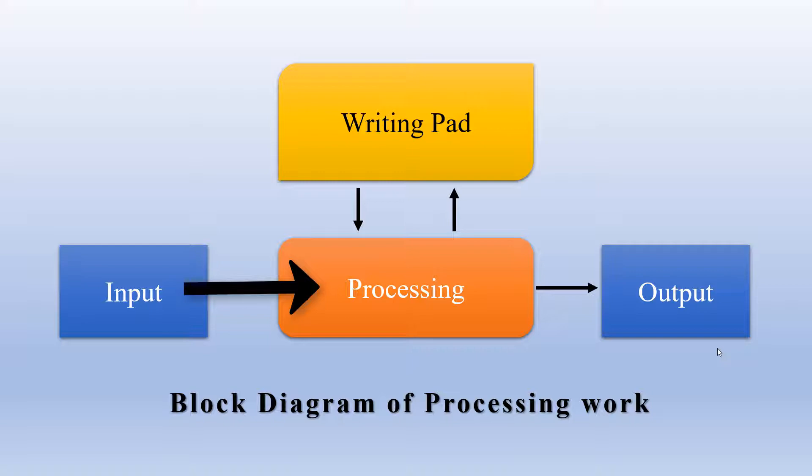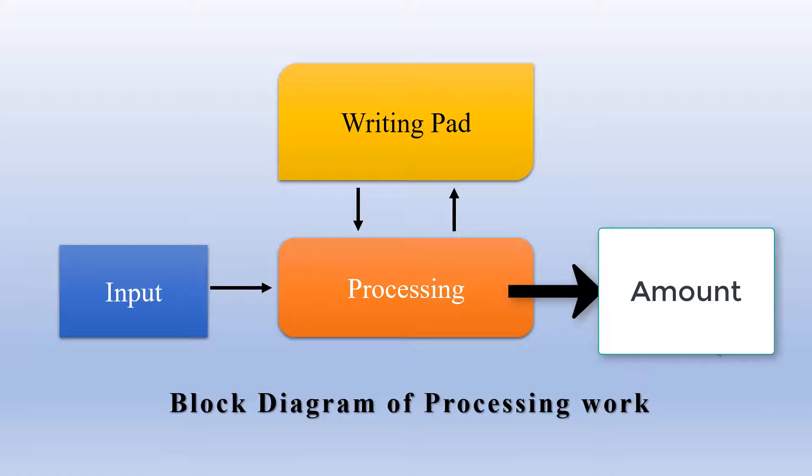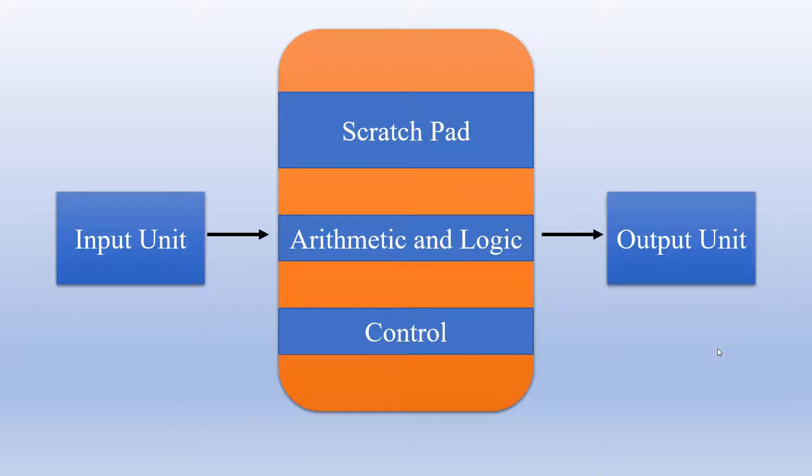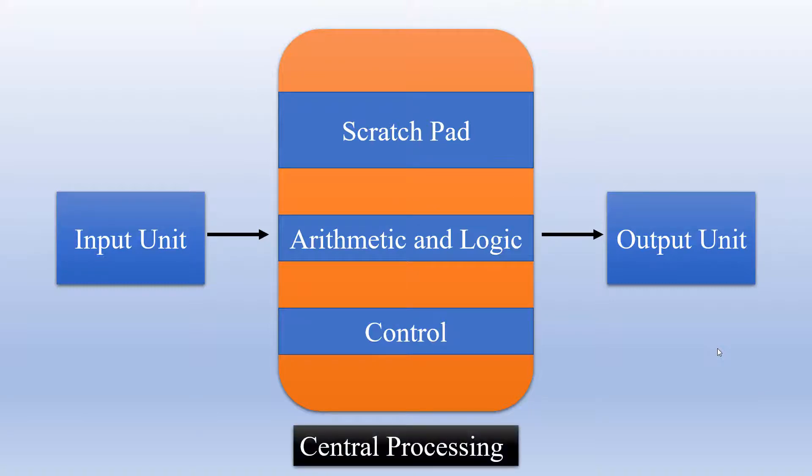You write down something on the writing pad, the whole process is carried out, and finally the payment amount is generated. During the process, human beings will do some arithmetic and logic type of operations, some control and timing control, and there is a scratch pad on which they would write down. This whole central block is called the central processing. The events around us generate the input, we do some processing on that, and generate some outputs.